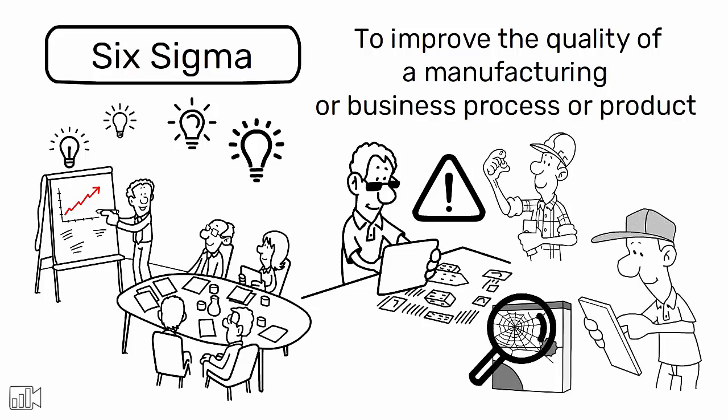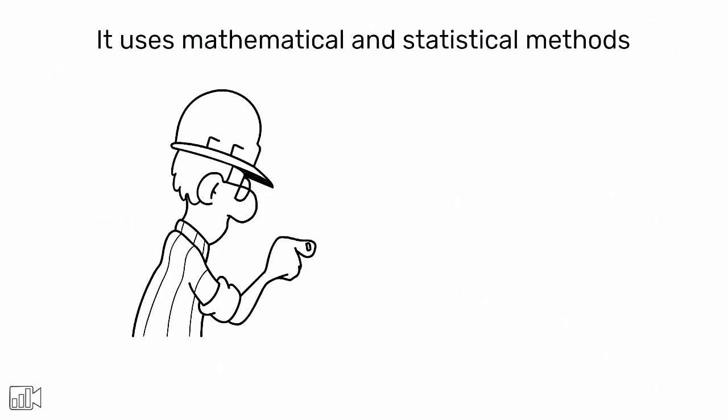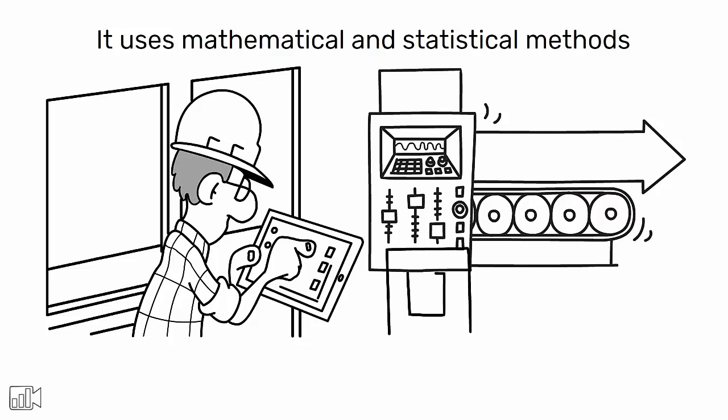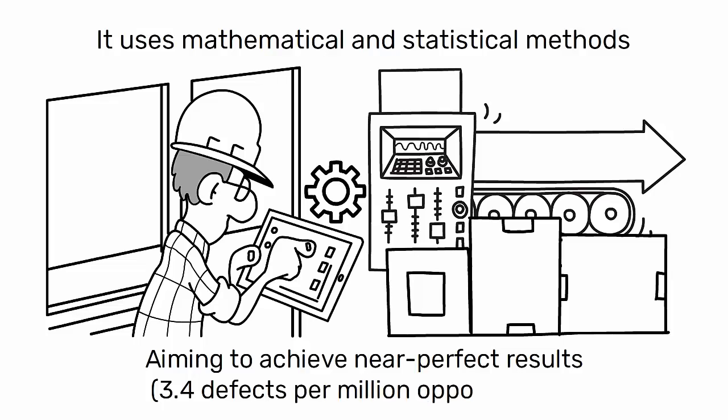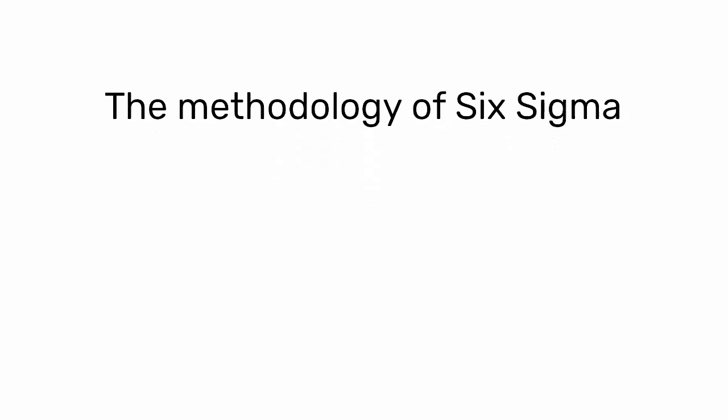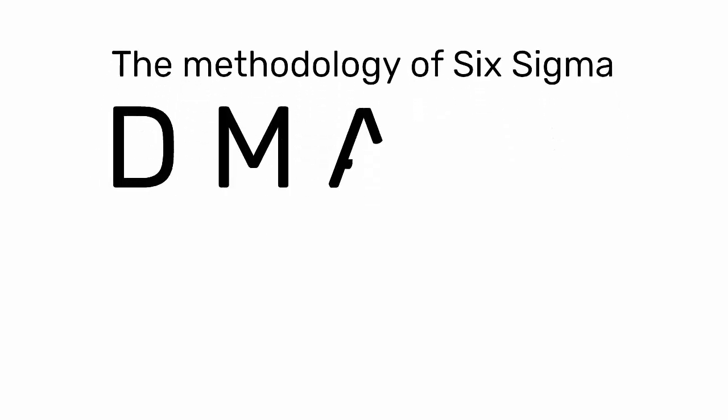It uses mathematical and statistical methods to reduce process variation and enhance process control, aiming to achieve near-perfect results (3.4 defects per million opportunities). The methodology of Six Sigma is often summarized by the acronym DMAIC: Define, Measure, Analyze, Improve, and Control.